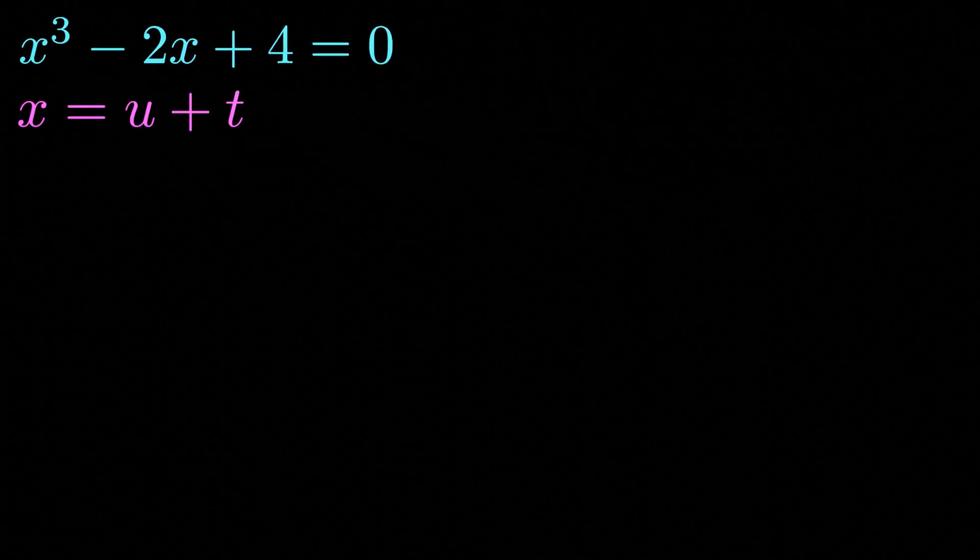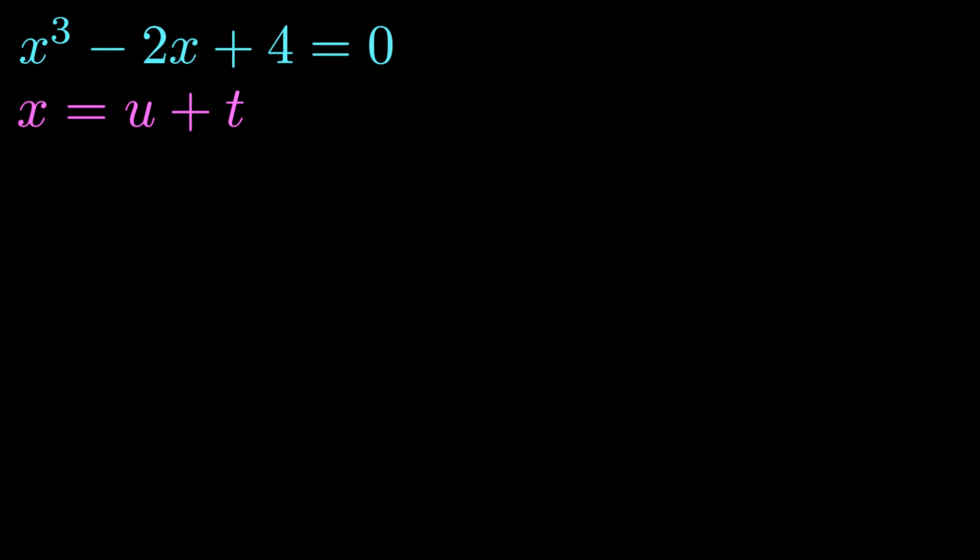Let's begin by setting x to be equal to u plus t. The reason for doing so is that this provides an extra degree of freedom, which ultimately allows us to construct a useful second constraint that will eventually allow us to reduce our problem to that of solving a quadratic.